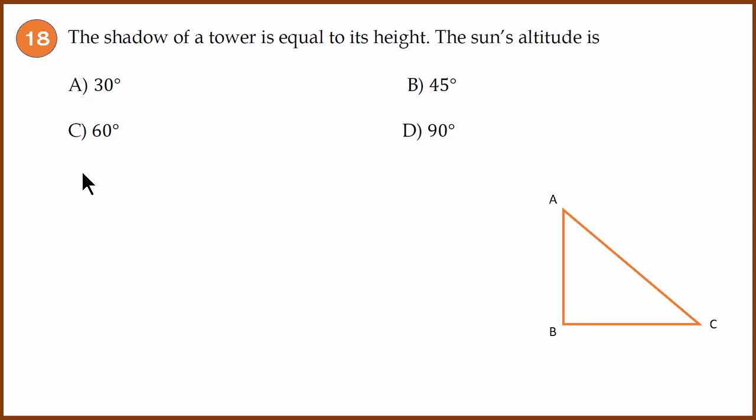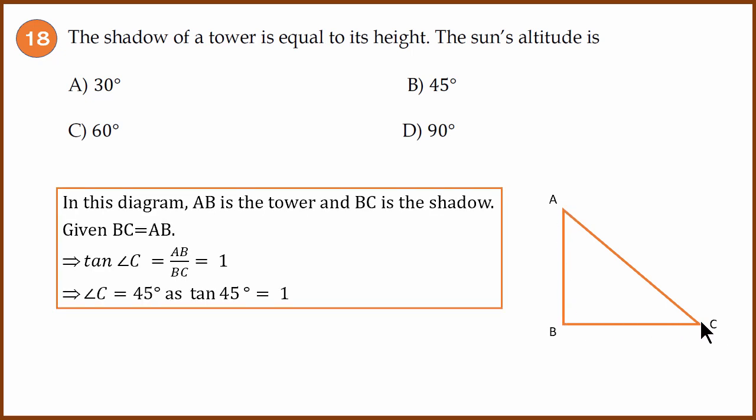Question 18: The shadow of a tower is equal to its height. The sun's altitude is? There's a tower AB, and the shadow is BC. What is given is AB is same as BC. Because AB is same as BC, we can say that tan C is AB/BC, which is 1. Tan C = 1 implies C is 45° as tan 45° is 1. So the C angle is 45°, and the sun's altitude is 45°.